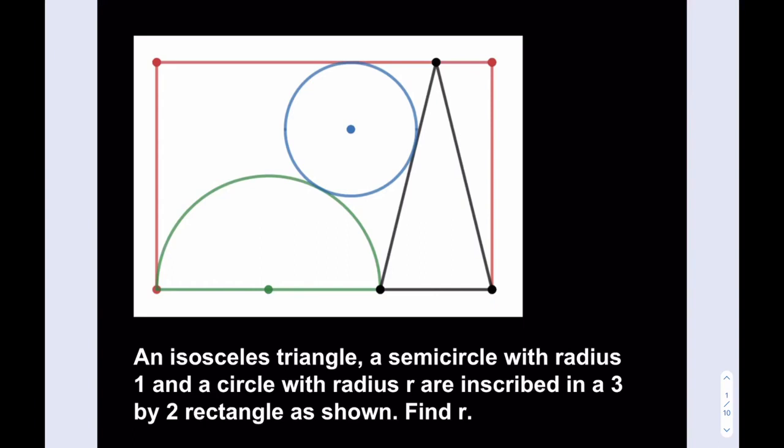Hello everyone. In this video, we're going to be solving an awesome geometry puzzle. An isosceles triangle, a semicircle with radius 1, and a circle with radius r are inscribed in a 3 by 2 rectangle as shown. Find r.